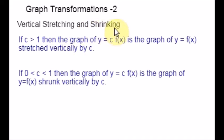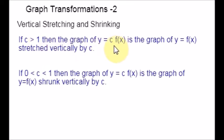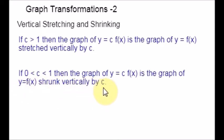Let us start with vertical stretching and shrinking. If a number c is greater than 1, then the graph of y equal to c times f(x) is a graph of the function y equal to f(x) stretched vertically by c. If you take any number greater than 1 and multiply it with a function, you will be doing a vertical stretch. If c lies between 0 and 1, then the graph of y equal to c times f(x) is the graph of y equal to f(x) shrunk vertically by c.